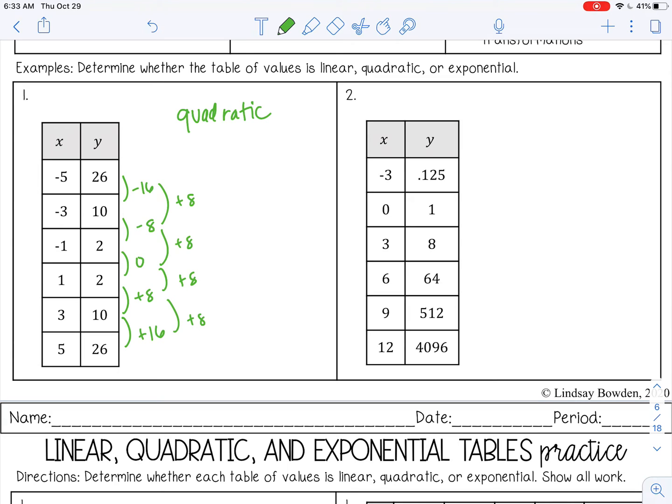All right, and then number 2. Let's see: negative 3, 0, 3, 6, 9, 12. That works out. Okay, so from 0.125 to 1, let's see, I'm going to use my calculator here. You need to add 0.875. And then from 1 to 8, that's plus 7. From 8 to 64, plus 56. Okay, this is definitely not linear.